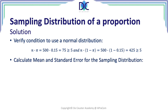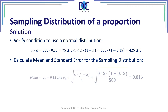The next step is to calculate the mean and the standard error for the sampling distribution. The mean mu p is 0.15, the 15%. And we can calculate sigma, the standard deviation, which is the square root of 0.15 times 1 minus 0.15 divided by 500, and that gives us 0.016.